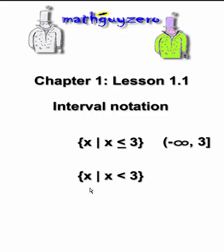So here's an example of the set of x such that x is less than 3. It's not less than or equal to, it's just less than. So it's going to change the bracket to a parenthesis.